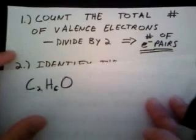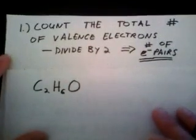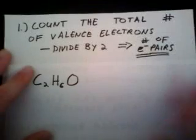Very exciting. All right, so in using this method, the first thing we're going to do is we're going to count the total number of valence electrons. We're going to divide that number by two, and that's going to give us the number of electron pairs.